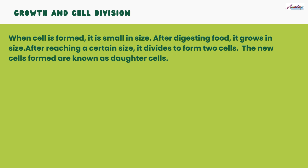After digesting food, the cell starts growing. After growing to a certain size, that cell starts to divide and new cells are formed. These new cells are called daughter cells. These new cells are needed for the growth of an organism and to replace cells that die.